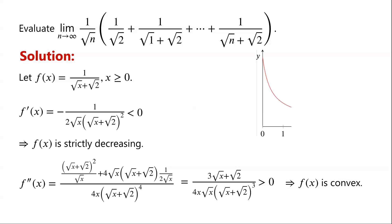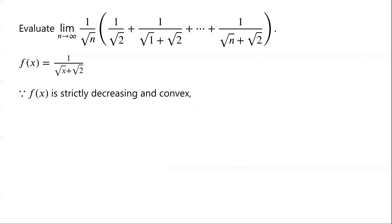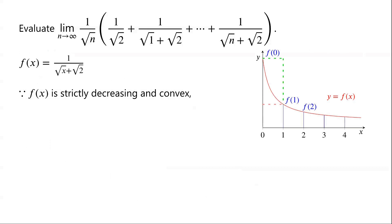f of x can be sketched accordingly. Because f of x is strictly decreasing and convex, f of 0 is greater than f of 1, which is greater than f of 2, and so on, which is greater than f of n. Note that the integral of f of x with respect to x from 0 to n plus 1 represents the area under the curve between x equals 0 and x equals n plus 1. From the graph, f of 0 plus f of 1 plus so on plus f of n is the left Riemann sum with step size 1 for the integral of f of x from 0 to n plus 1. Since f of x is convex and strictly decreasing, the left Riemann sum overestimates the integral from 0 to n plus 1. This implies that the integral of f of x from 0 to n plus 1 is less than the sum of f of k from k equals 0 to n.